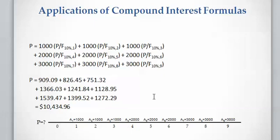For the second series of three payments, you calculate the present value with two thousand dollars multiplied by the P/F factor at 10 percent with n equal to 4, because it is happening at year four — four years away from the present time — and so on for the remaining payments.